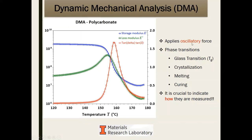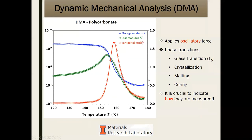Dynamic mechanical analysis involves applying an oscillatory force instead of a linear force, giving a completely different set of data: storage and loss moduli, and tan delta (loss divided by storage modulus). This tells you about phase transitions, crystallization, melting, and curing. When reporting dynamic mechanical analysis data, make sure to clearly state all experimental parameters — frequency, strain amplitude, geometry — because there are many more variables than in a simple stress-strain measurement, and this is critical for reproducibility.